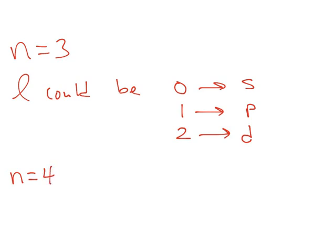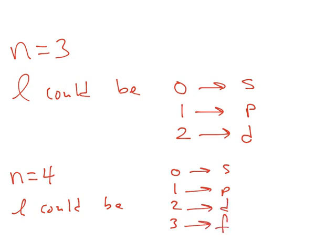If n equals 4, L could be 0, 1, 2, and now 3, because n minus 1 equals 3. So we could have an s-orbital, p-orbital, d-orbital, or f-orbital — those are the classic four orbitals from general chemistry. To recap on potential energy: if n equals 3 and we're stuck there, L also affects potential energy. The lower the L number, the better. The s-orbital has the lowest potential energy, p has higher, and d even higher. Electrons want to have the lowest possible potential energy.